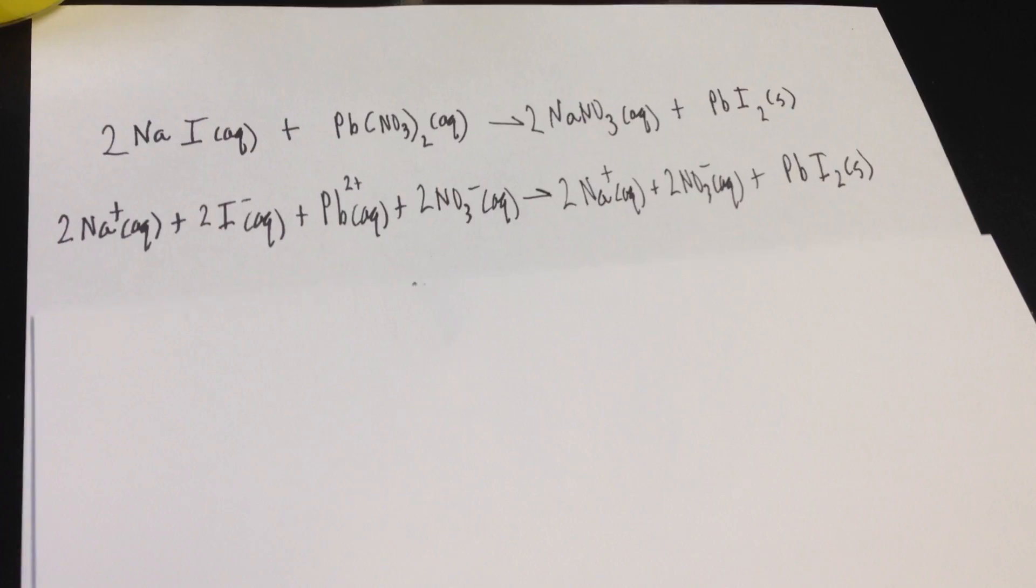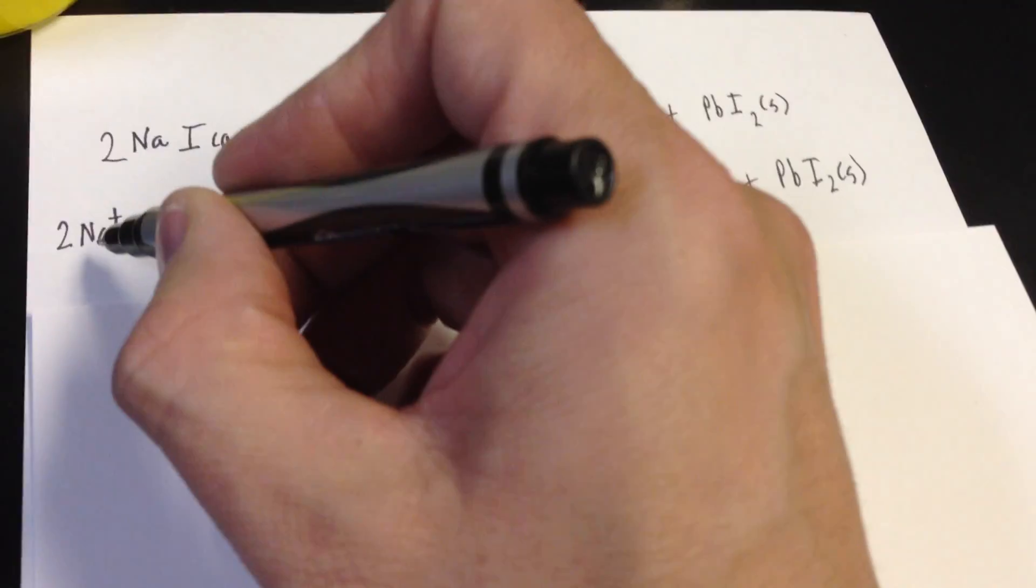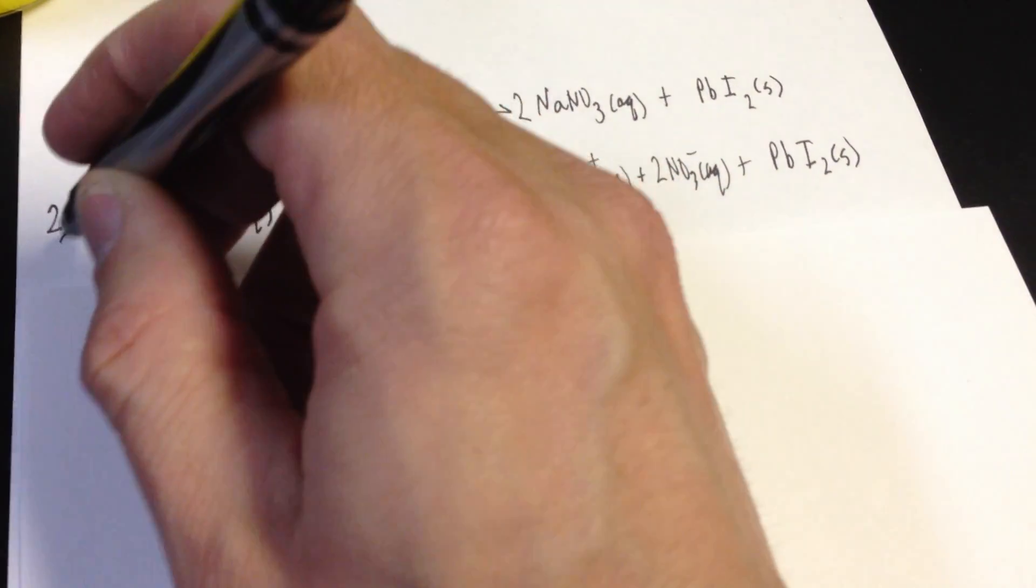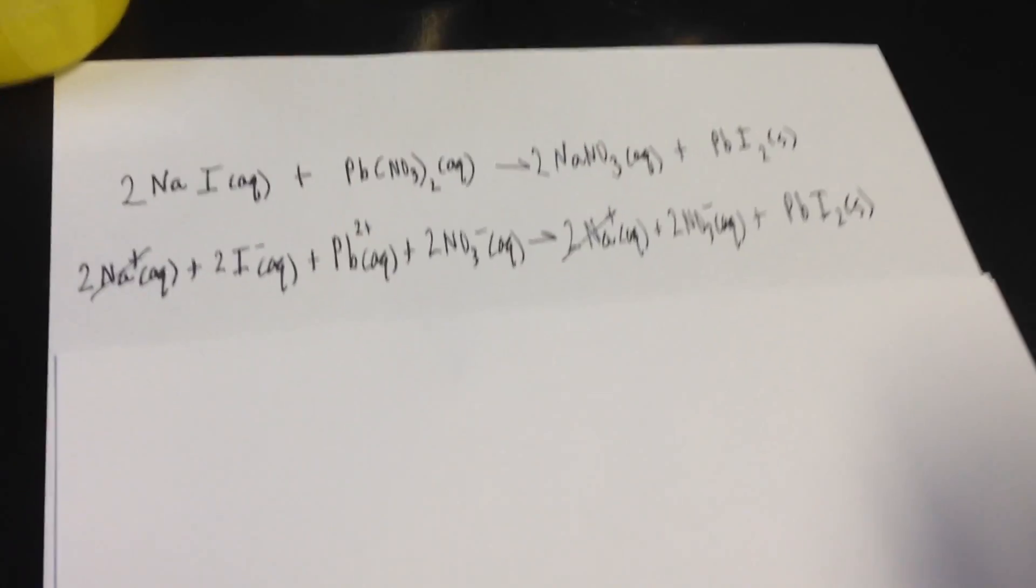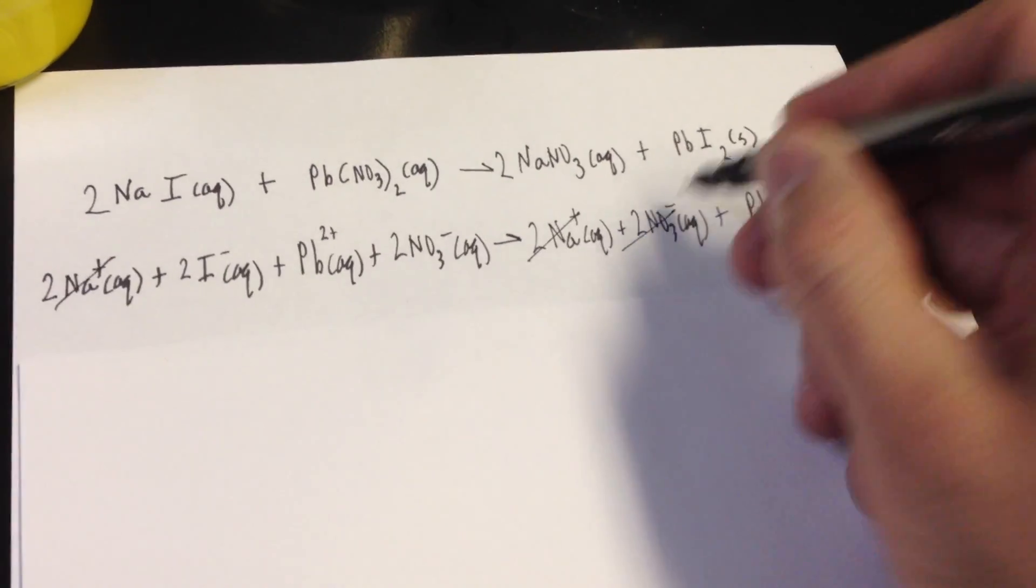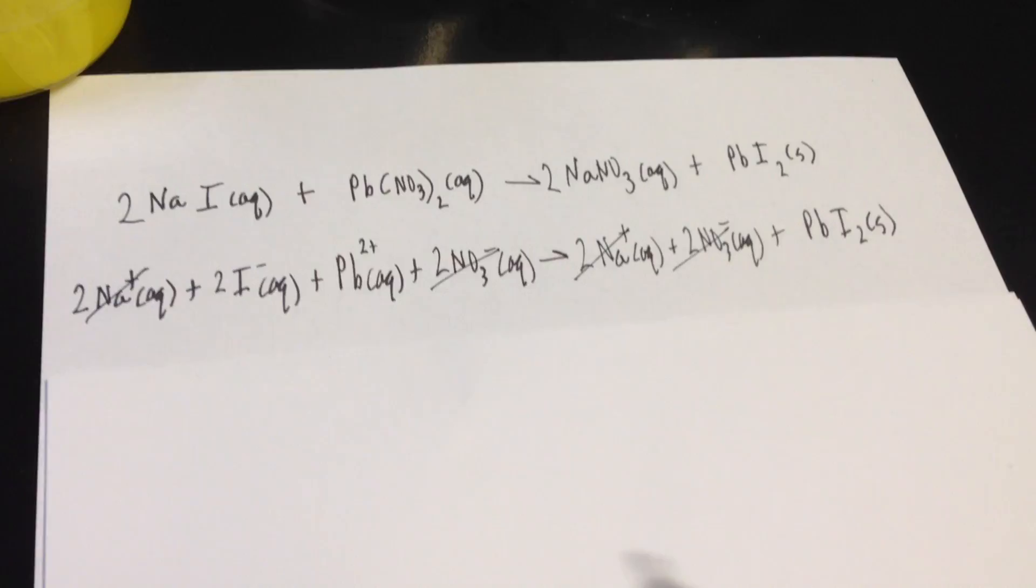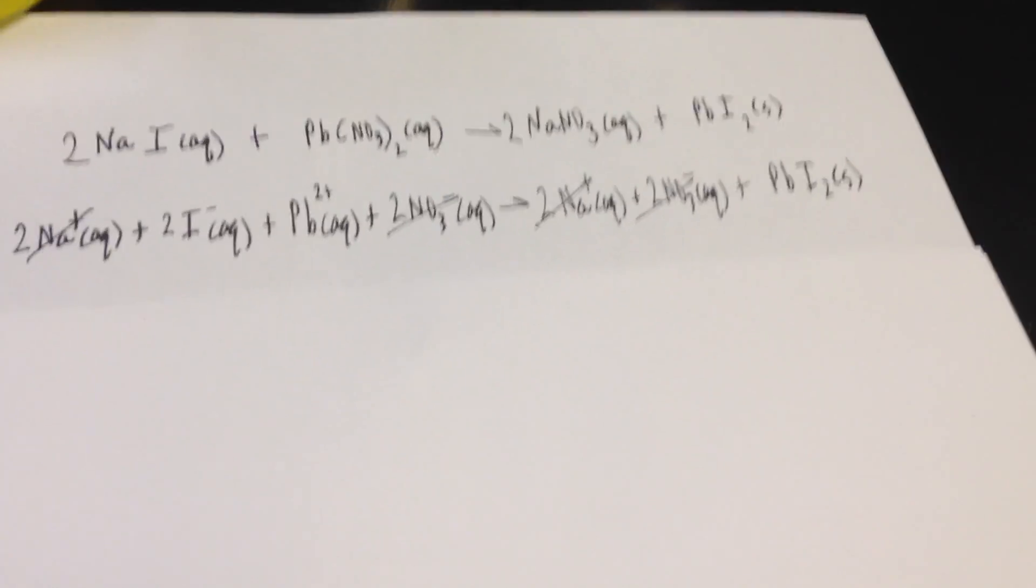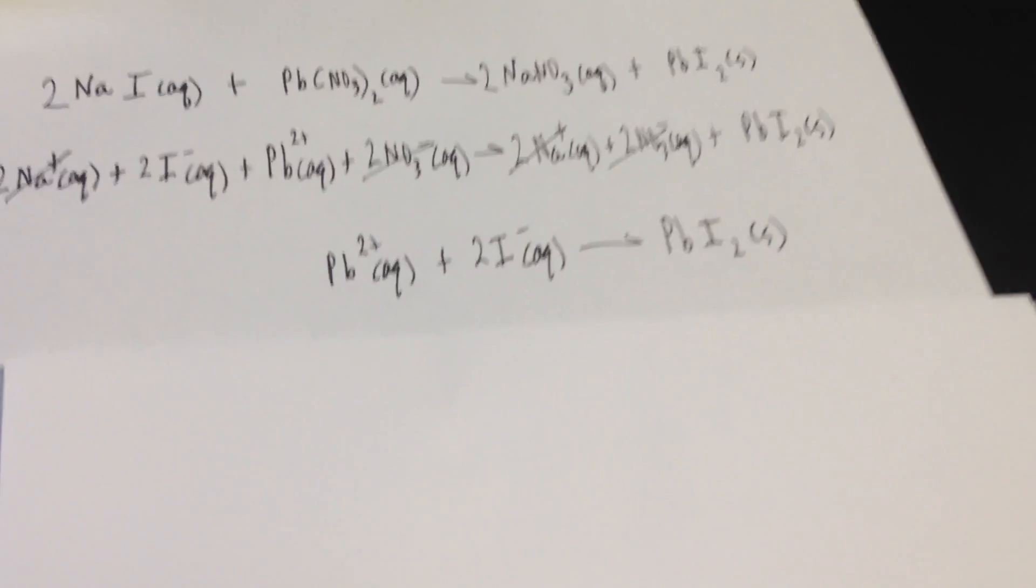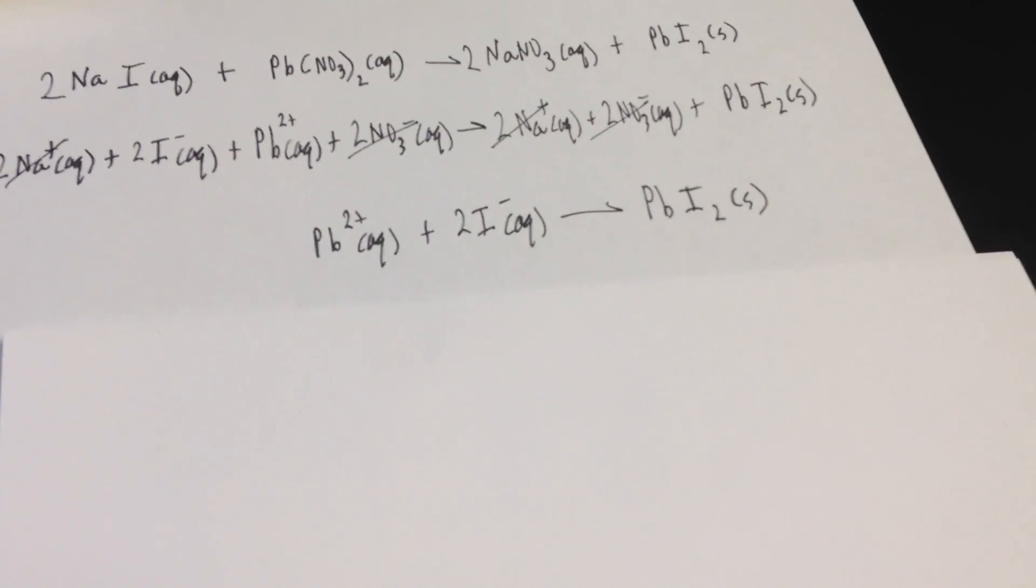I'm going to cross off the spectators for you real quick, and we'll have what we call a net ionic. So I have two sodiums on both sides, so they're gone. And one of the other spectators, do you guys see them? That's right, the two nitrates, they're gone. So we have the lead ions and the iodide ions remaining, along with PbI2 solid. And so we call whatever's left the net ionic.